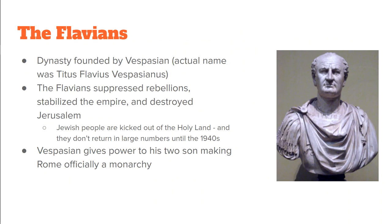The Flavians are the dynasty founded by Vespasian — officially Titus Flavius Vespasianus, which is where you get 'Flavians' from. The Flavians were kind of ruthless and hardcore, but not necessarily bad. They managed to stabilize the empire, but while doing that they put down a bunch of rebellions, including the final Jewish revolt in Jerusalem. The Jewish people are kicked out of the Holy Land, the city of Jerusalem is destroyed, the temple is destroyed, and the Jewish people actually don't return to the Holy Land until the 1940s after World War II. At the end, Vespasian gives power to his two sons — Titus and Domitian — making Rome officially a monarchy. Domitian, however, was assassinated in the year 96.